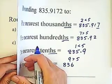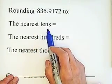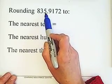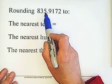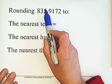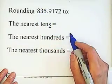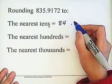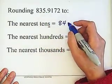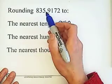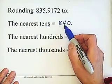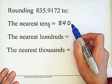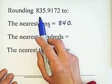Rounding to the nearest ten: the tens place is the second digit on the left side of the decimal point, which is 3. Check on the right side of the rounding digit — it is 5. Since 5 equals 5, we still add 1 to the rounding digit. So 3 becomes 4, and the digit 5 is replaced by 0 to keep the decimal point at the proper position. The answer is 840.